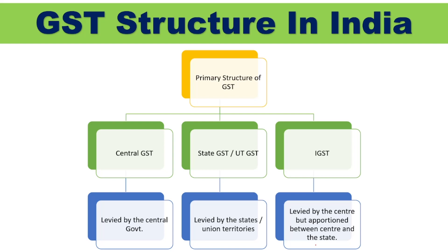IGST means Integrated Goods and Services Tax. It is actually levied by the Central Government, but whatever tax it collects is apportioned — proportionately divided — between the Centre as well as the State. IGST is collected by the Central Government, but later it is proportionately divided between the Centre and the State Government.